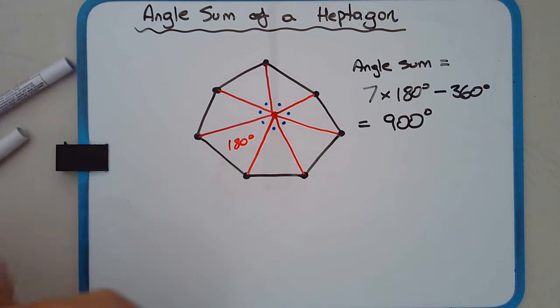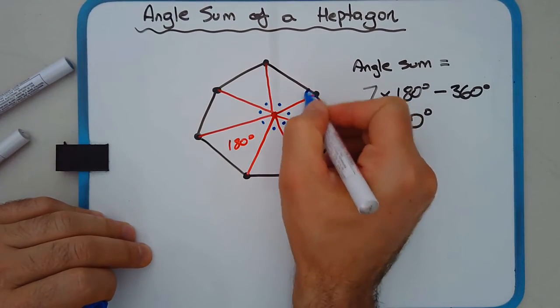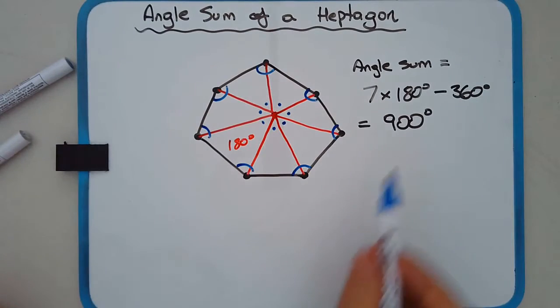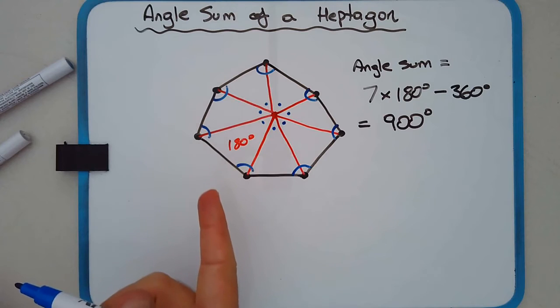In other words, if we added all of these angles up here, all of the angles at the vertices, all seven vertices together, it would be 900 degrees. So what would be the value of one of these vertices there?